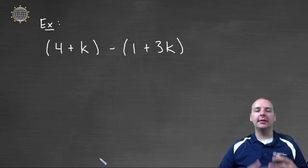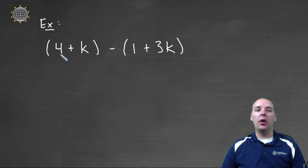Let's look at a few examples where we practice the distributive property. Here's our first example. We have the quantity four plus k minus the quantity one plus three k.